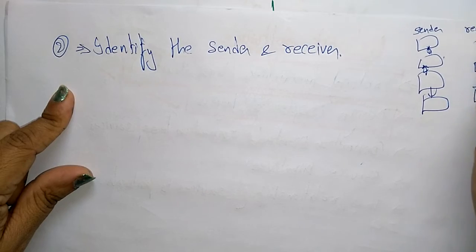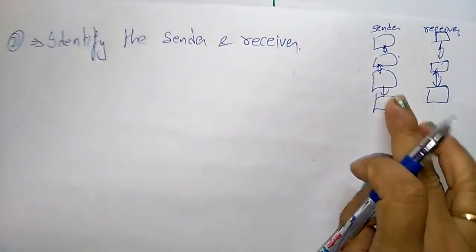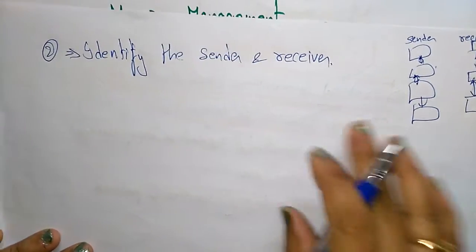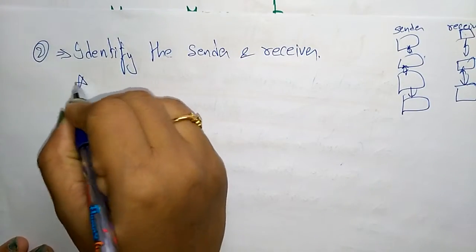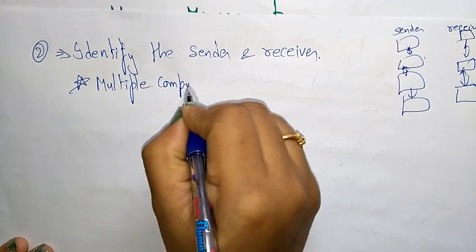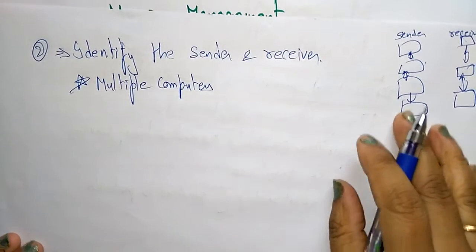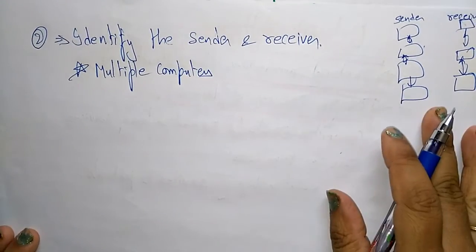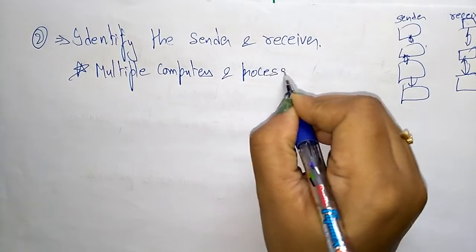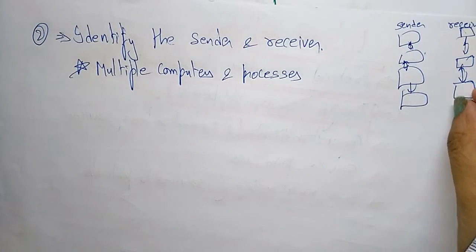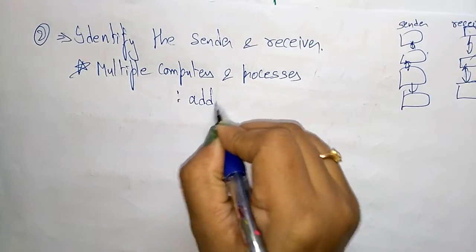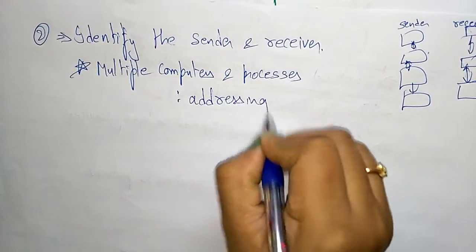And this is the receiver, from one host to another host. So first you have to identify the sender and the receiver. Next, if there are multiple computers, in those multiple computers you have to find out who is the sender and who is the receiver. And you have to identify the process, what type of data you want to transfer from sender to receiver. That should be everything based on addressing, with the help of addressing.